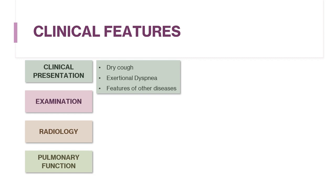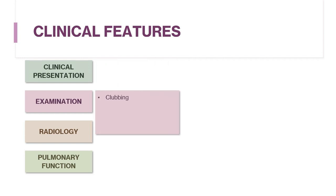Sometimes you may note signs related to systemic diseases, like thickened skin in scleroderma, a heliotrope rash and Gottron's papules in dermatomyositis, and hand deformities in rheumatoid arthritis. Physical examination may reveal clubbing, which is common in idiopathic pulmonary fibrosis but may also be seen in other diseases like asbestosis.